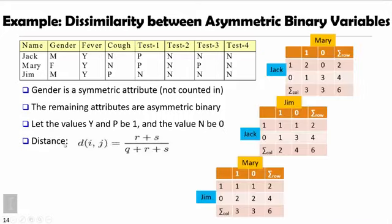In that case, we look at our distance measure for asymmetric attributes. We can work out these contingency table for Jack and Mary. We can see Jack and Mary, they are the same positive case, like both have fever, both test one actually is positive. There are two such cases. They are both negative, like cough, test two, and test four. Actually, there are three cases. They are both negative, but they do have one case they are different. So similarly, we can work a contingency table for Jack and Jim, Jim and Mary.